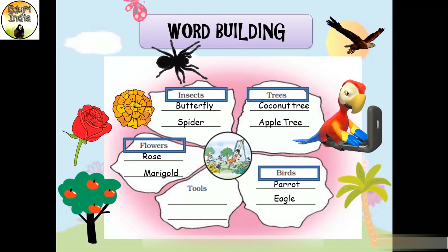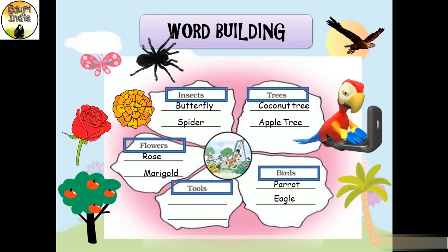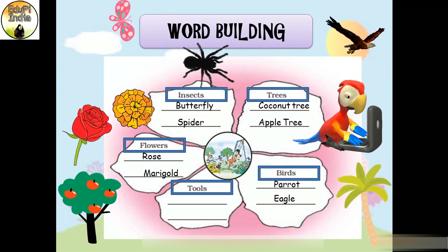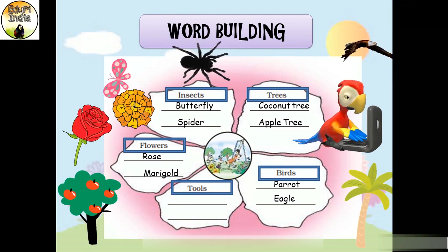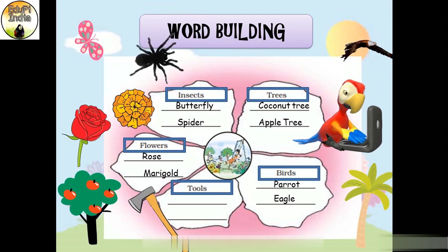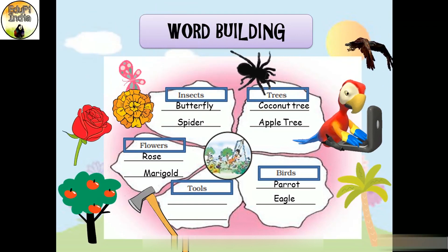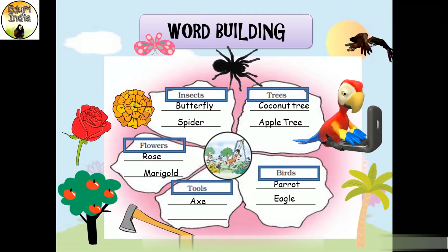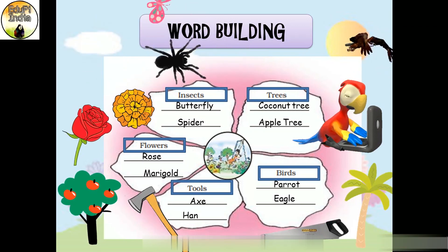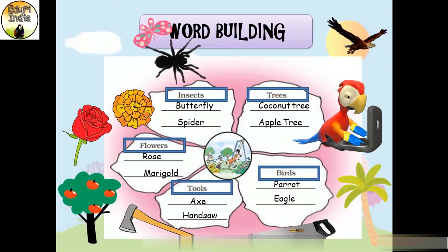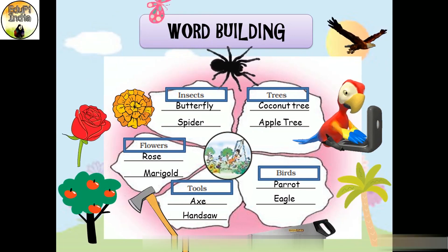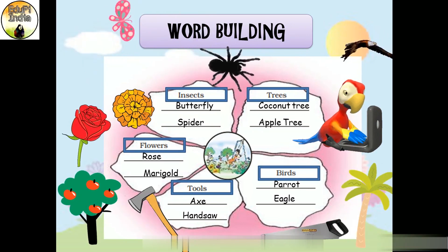Now let's see the last petal and discuss tools. Tools are instruments which we use in our garden, in fitting and fixing something, in electrical work, or in cutting and fixing furniture. For example, this one is an axe — A-X-E. And this one is a handsaw — H-A-N-D-S-A-W, handsaw. Other tools include nut, bolt, screw, hammer, a pair of scissors, drill, tape, etc.